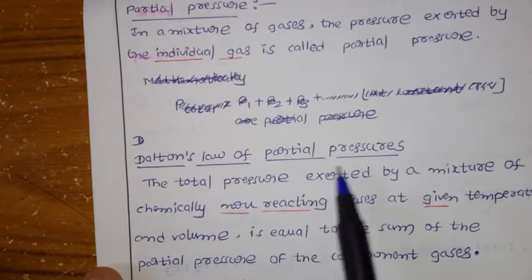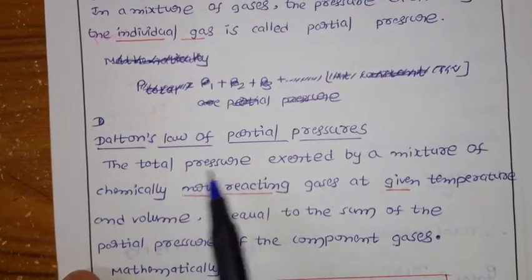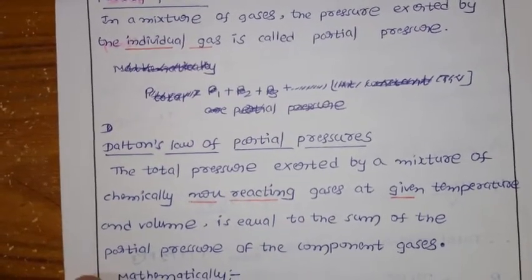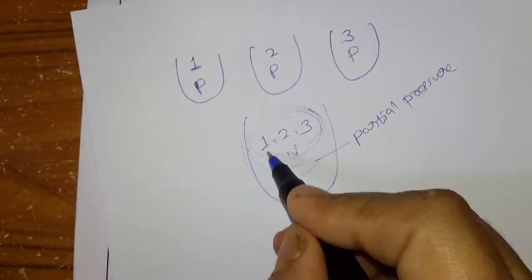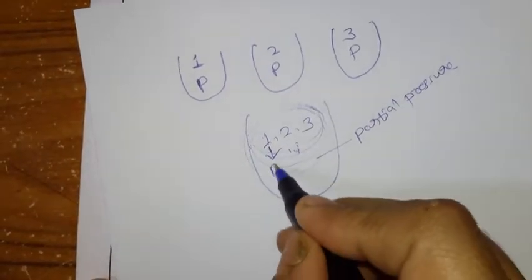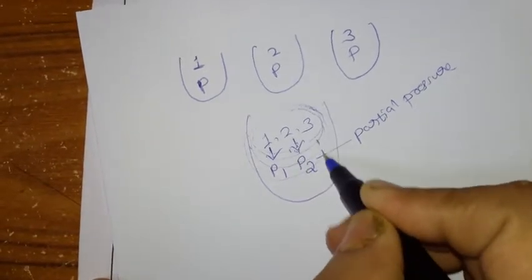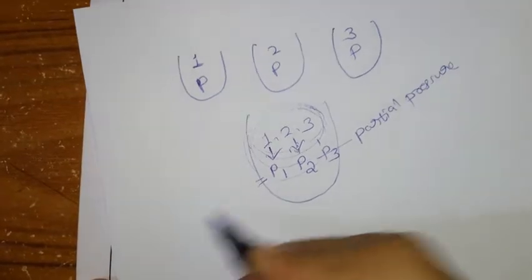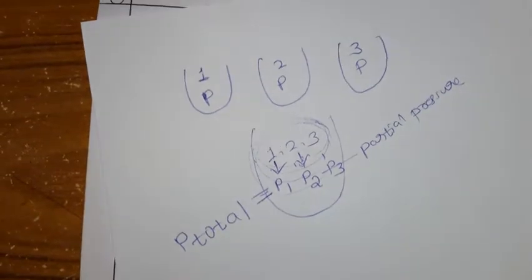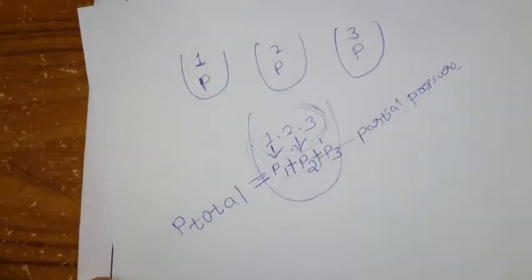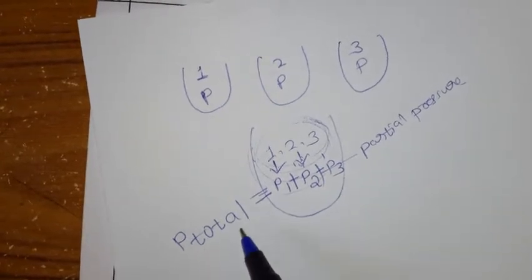Now let us discuss Dalton's Law of Partial Pressure. The total pressure: in the mixture, if you assume the gases have partial pressures P1, P2, and P3, then total pressure equals the sum of all partial pressures. So you add all partial pressures to get the total pressure.